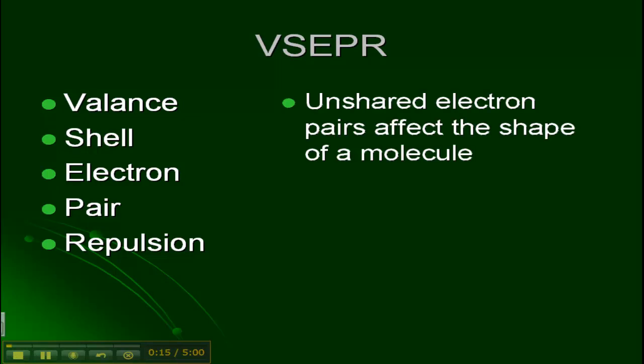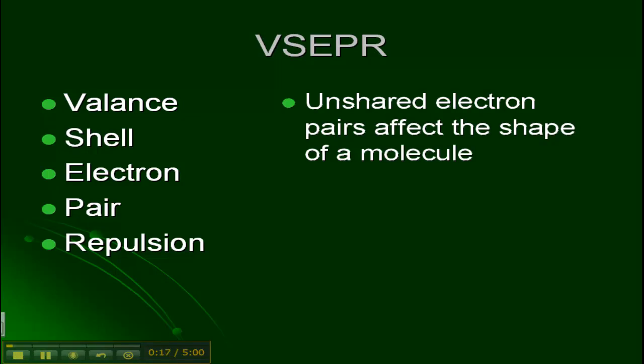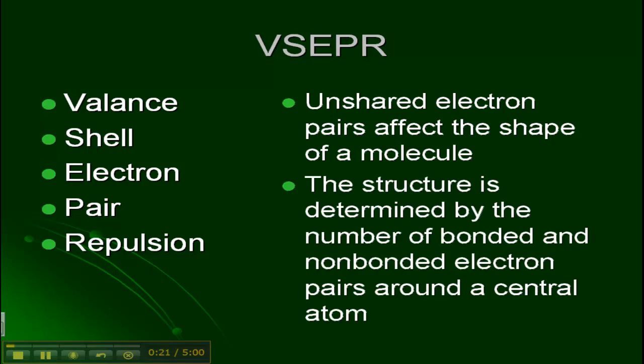What this is going to do for us is take into account the unshared electron pairs that affect the shape of the molecule. So the structure is going to be determined by the number of bonded and non-bonded electron pairs around the central atom.